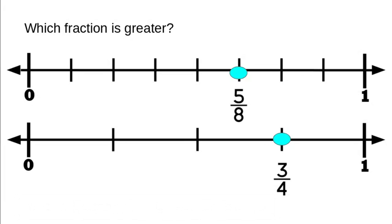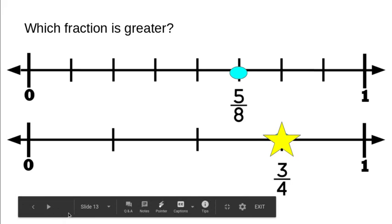This is our last one and it wants to know which fraction is greater. We have a number line broken up into eighths showing five eighths, and a second number line broken up into fourths showing three fourths. Which one is greater — which one is closer to the whole, which one is more? If you said three fourths, you are correct. And that's how we can compare fractions on a number line.